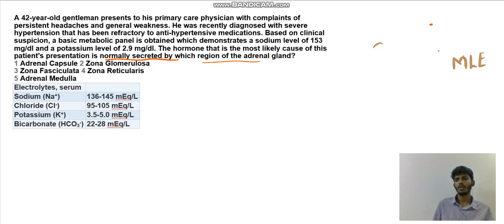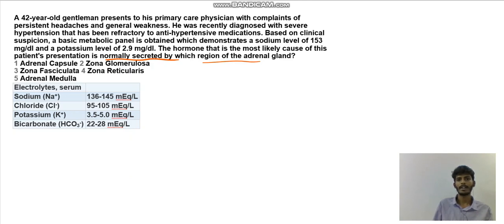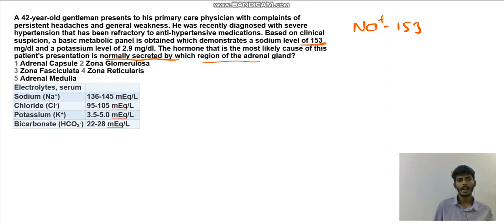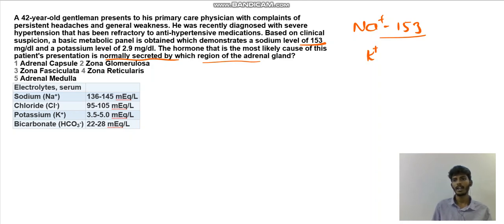The patient is having hypertension and was given antihypertensive drugs, but they didn't show effectiveness. After that the doctor suspected some problem and took a metabolic panel. In that panel, the sodium level was 153 and the potassium level is 2.9. Let's compare these values.